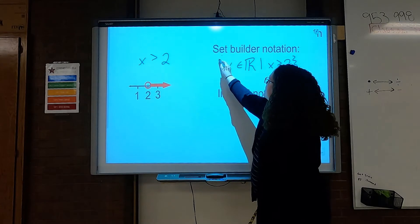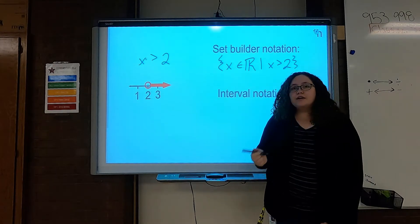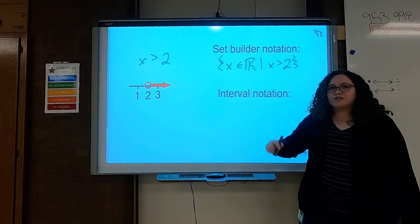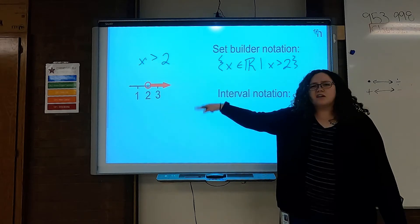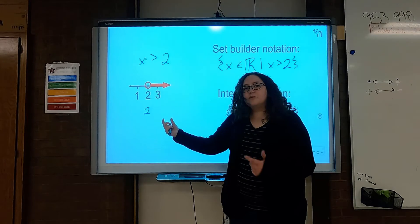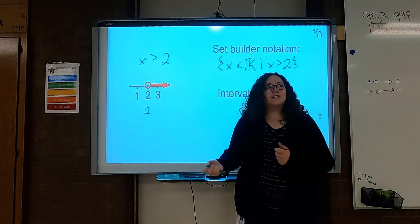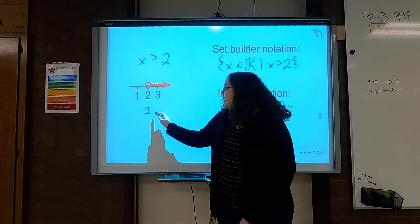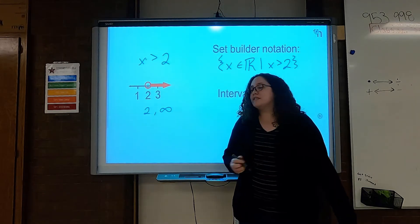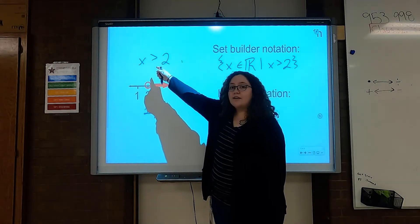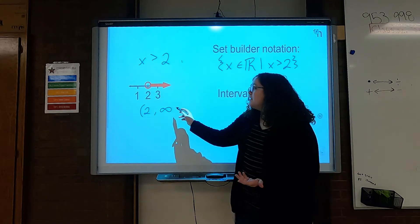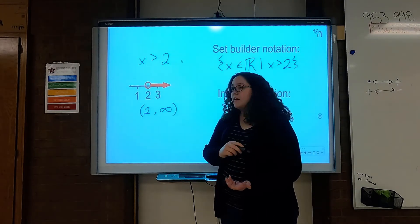Alright, so then for interval notation — this is a lot to write, so let's find the slang version. We are assuming that this is in the real numbers. So we're going to focus on the 2. This one is going to the right, which means it's going to go greater and greater all the way to infinity. Now, do we need brackets or parentheses? Well, that is an open circle — so just like I didn't need a line under this, I don't need a bracket, I just need a parenthesis. And infinity is a concept, not a number, so we never put a bracket on an infinity symbol.